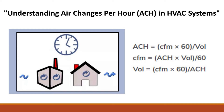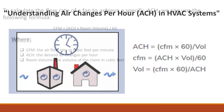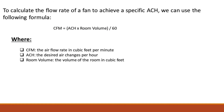So, how do you calculate air changes per hour? It's actually pretty simple. You need to know the volume of the room and the desired air changes per hour, and then use a formula to calculate the required air flow rate. To calculate the flow rate of a fan to achieve a specific air changes per hour, we can use the following formula.